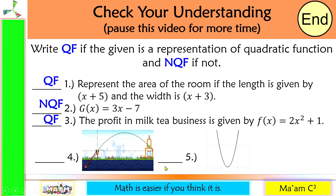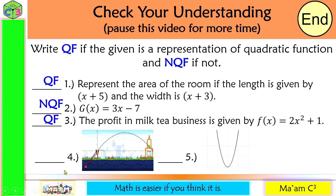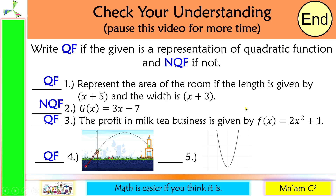Number four is a picture from the game Angry Birds, where you can see a parabola that opens downward — so yes, this is a representation of a quadratic function. Number five is a graph of a parabola that opens upward — so yes, this is also a quadratic function.